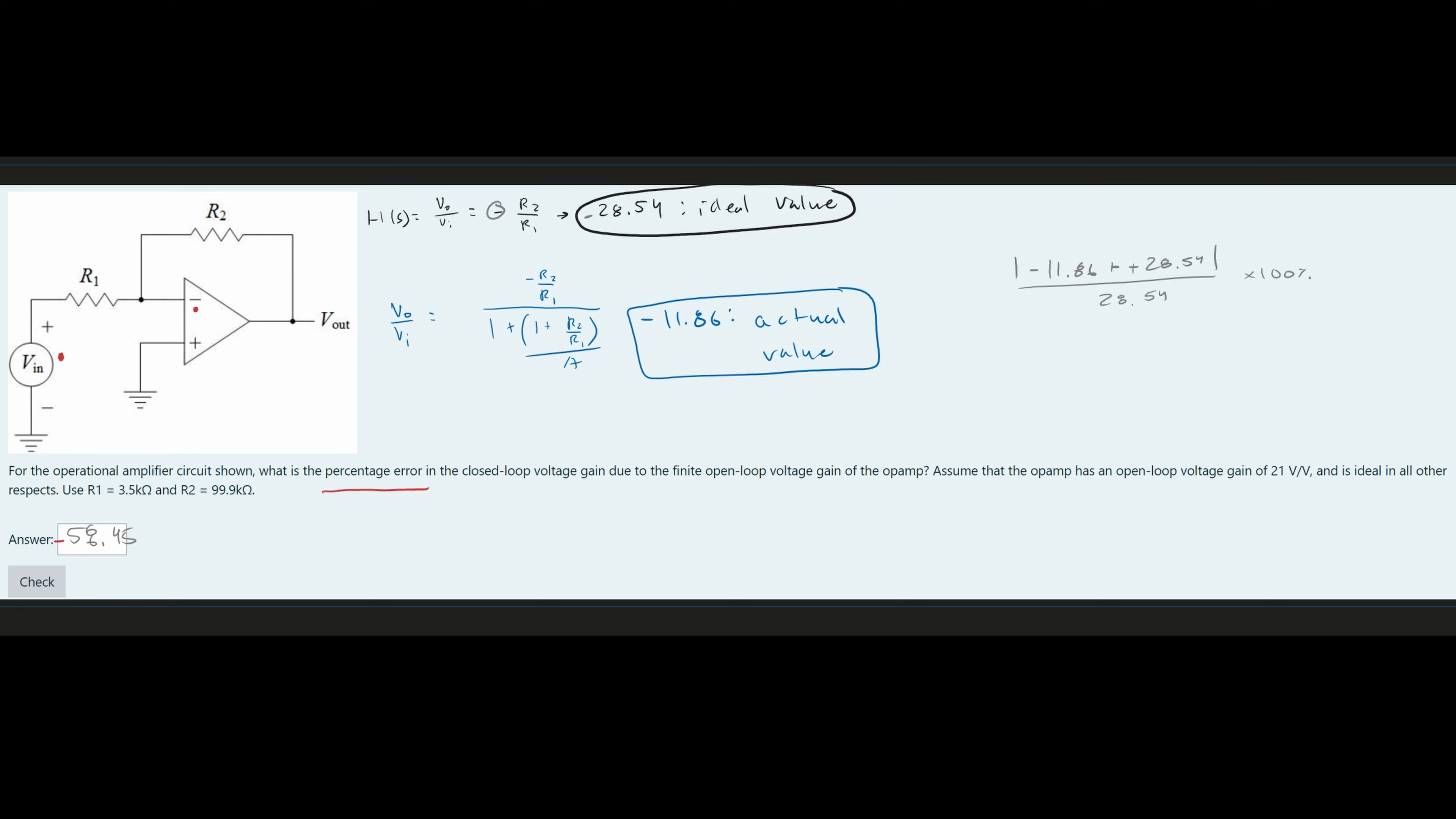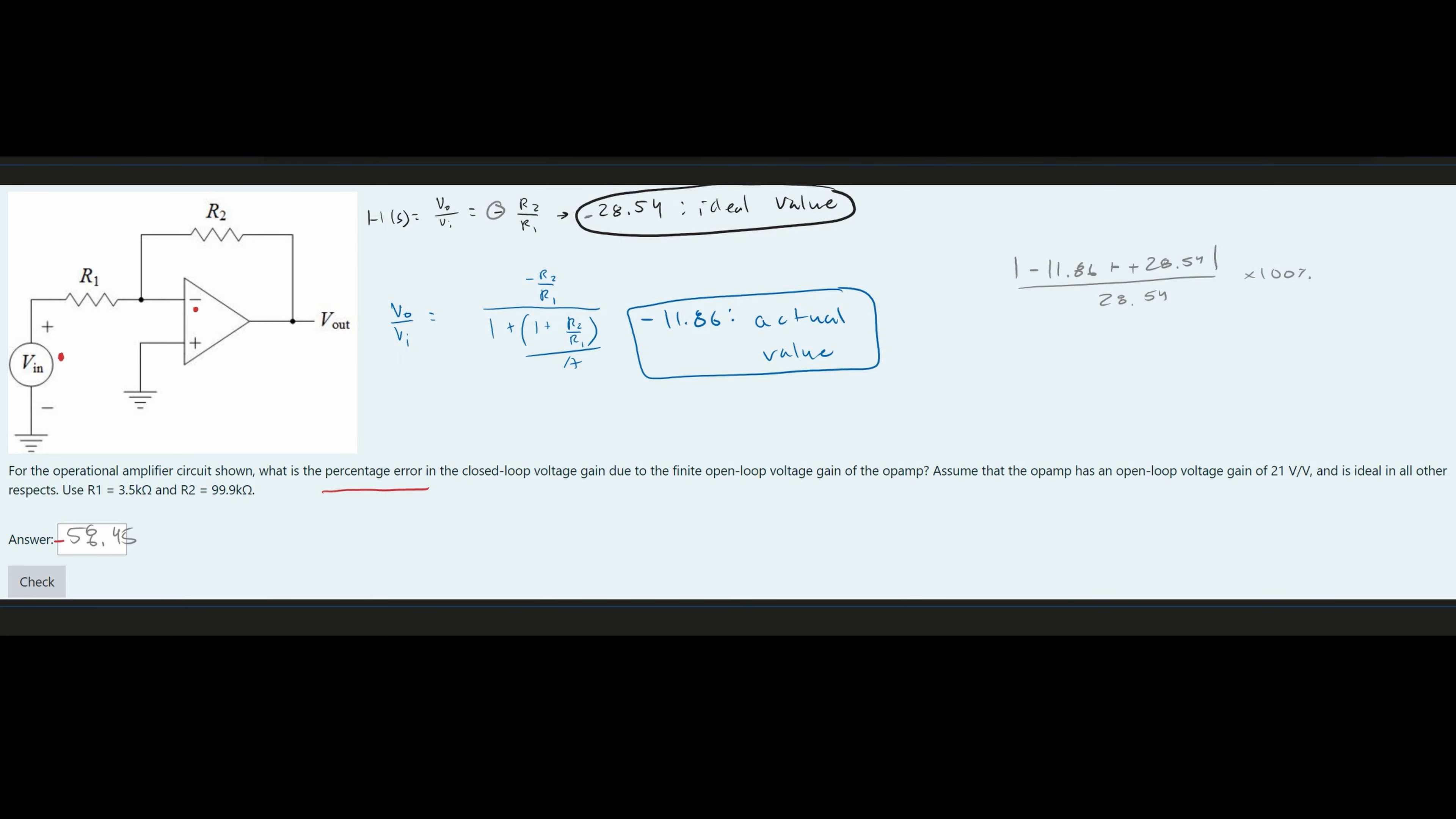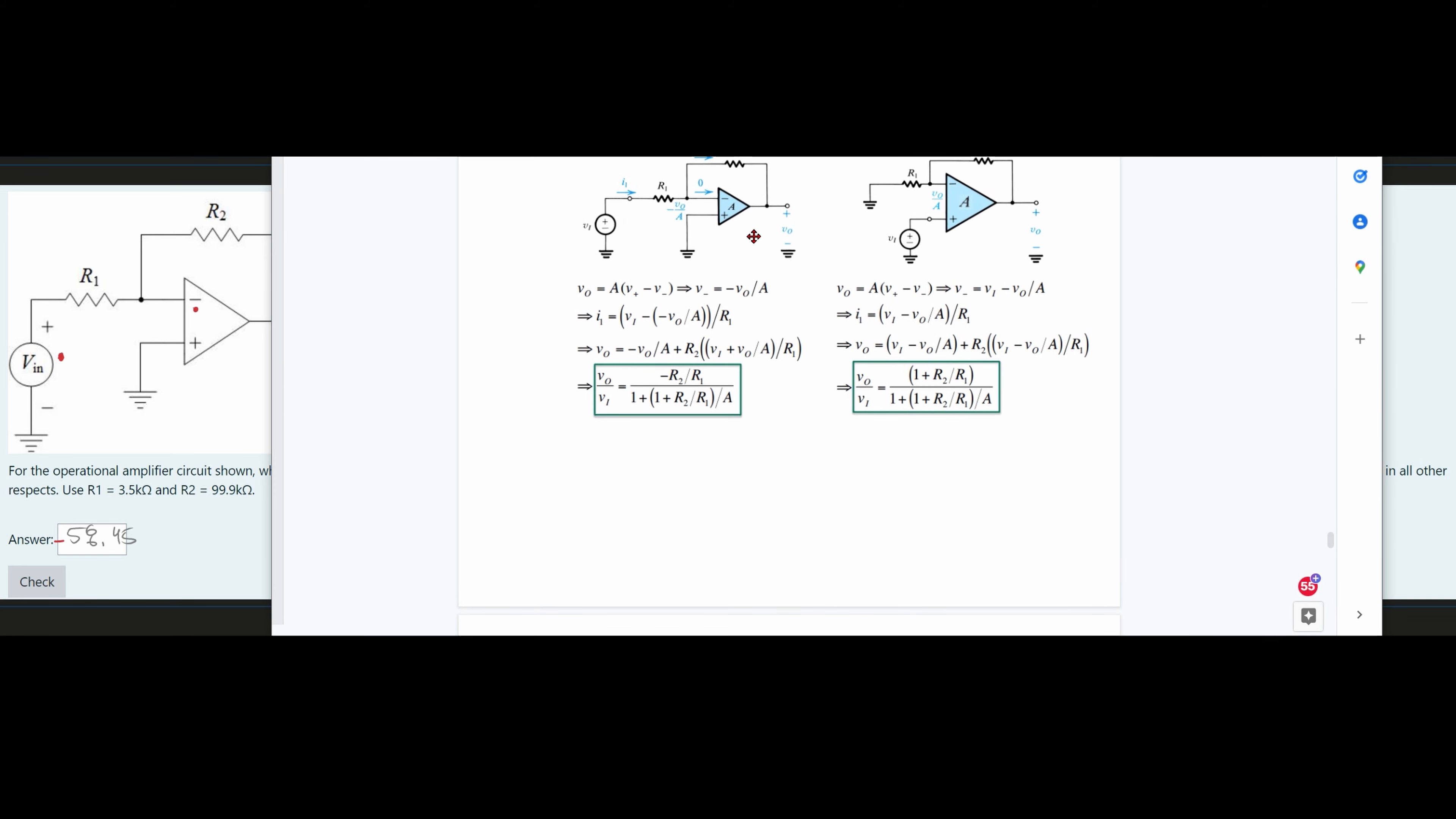If we're looking for just the closed loop gain, which is what we have here, which is the voltage input to the voltage output, which is what we did, we are going to use this formula. And if we are just looking for the open loop voltage, because it says it's due to the finite open loop voltage, if we were looking for this open loop voltage, it would just be the A inside of here. And that is the difference for what we would be doing here.